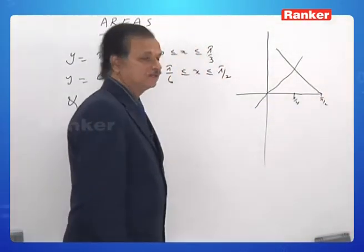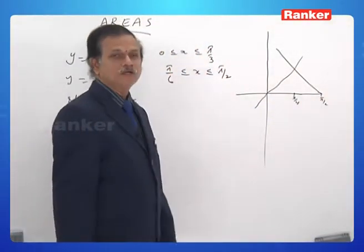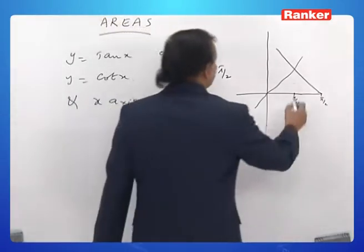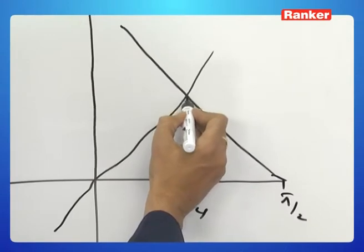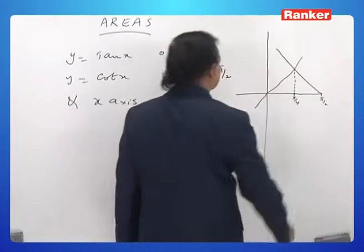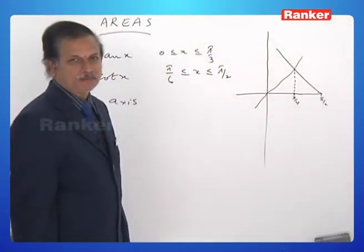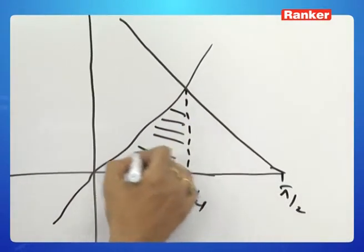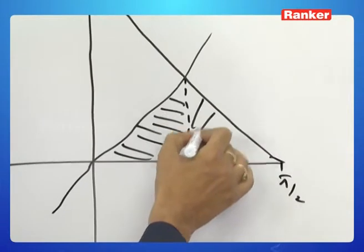This is cot x. In that region, everybody knows and believes that the two graphs meet at pi by 4. Our required area is this area plus this area.